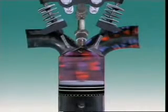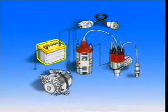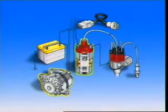The ignition system provides high intensity sparks at the spark plugs to ignite the fuel charges in the combustion chambers. The sparks must be supplied at the right time and they must have sufficient energy over a range of conditions to ignite the charges. The energy comes from the battery and alternator and the voltage is increased by the ignition coil.